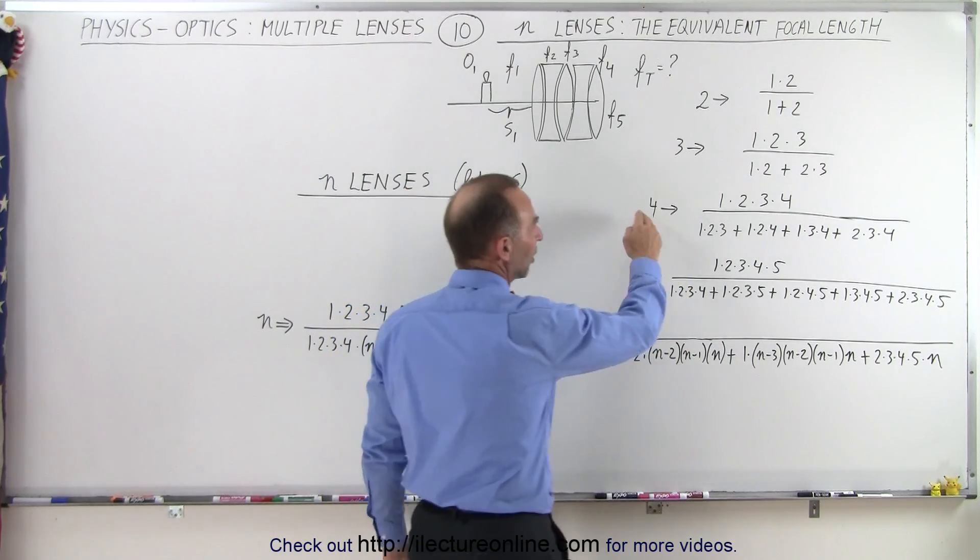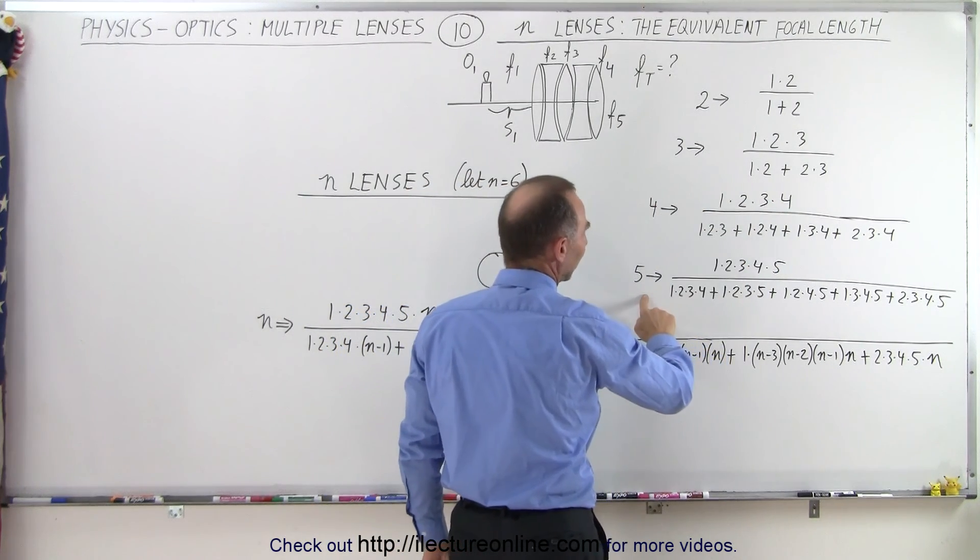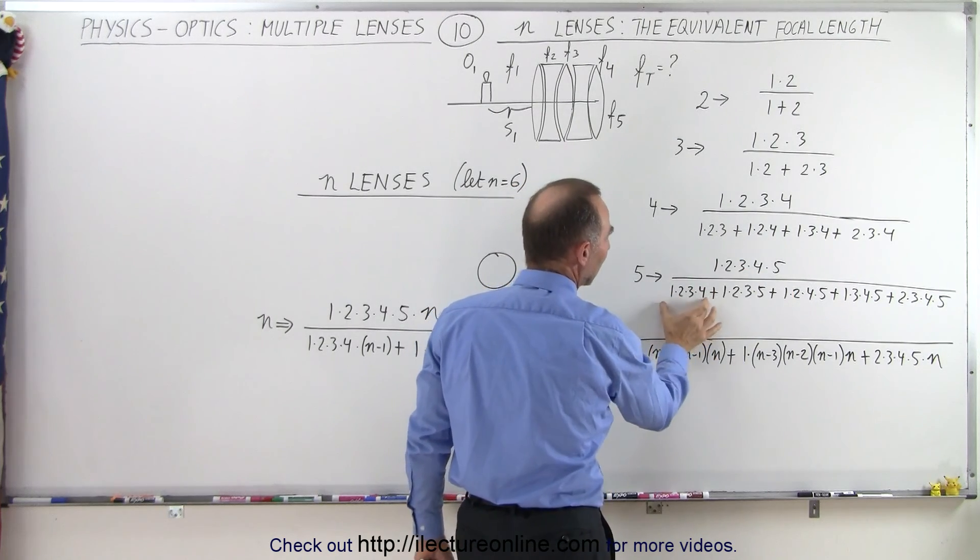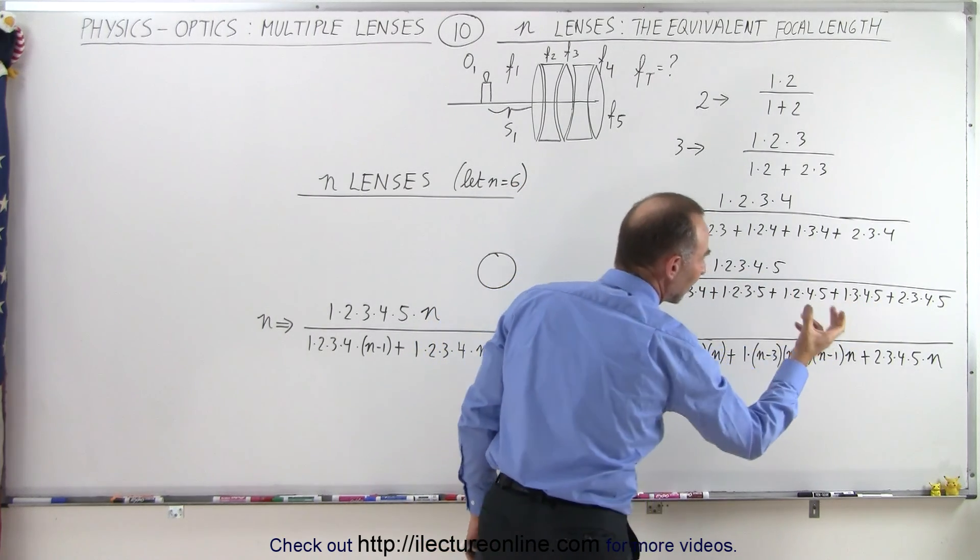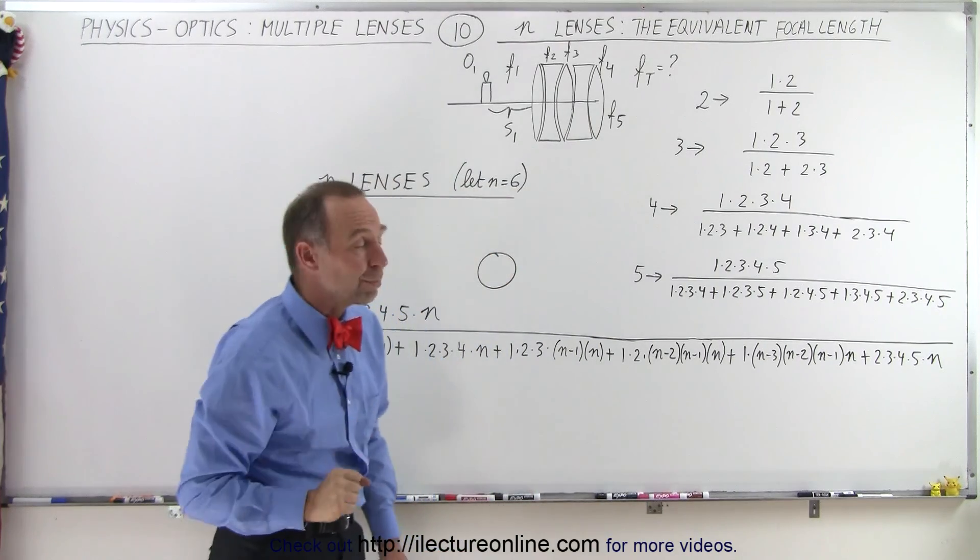With four lenses, you see the pattern like this. With five lenses, notice one, two, three, four, five in the numerator, and then you have five terms taking four lenses at a time, never repeating.